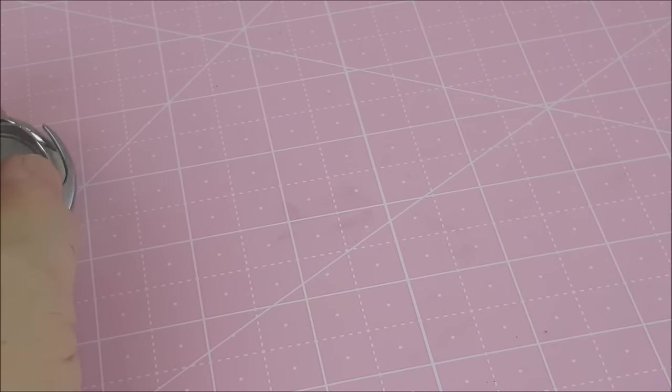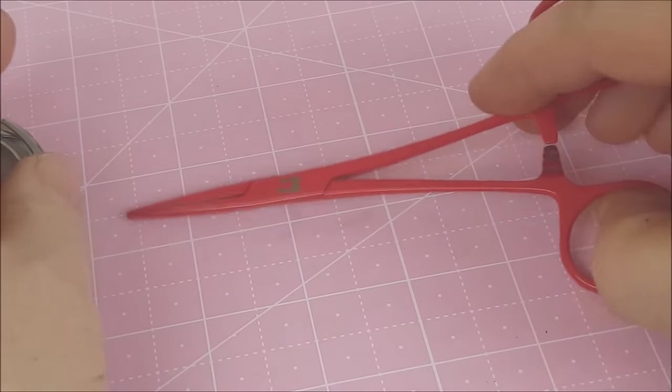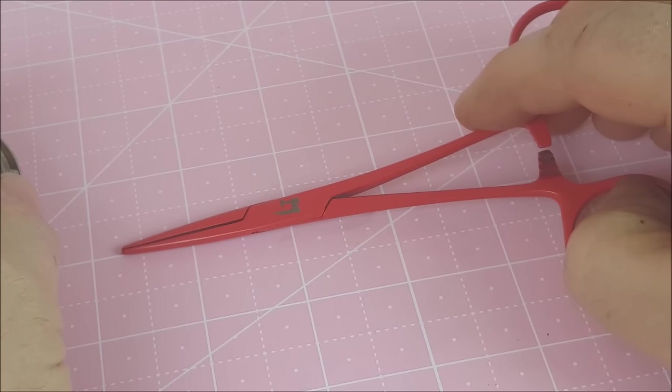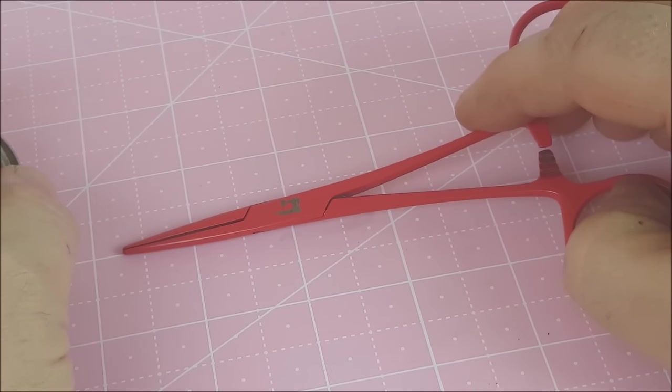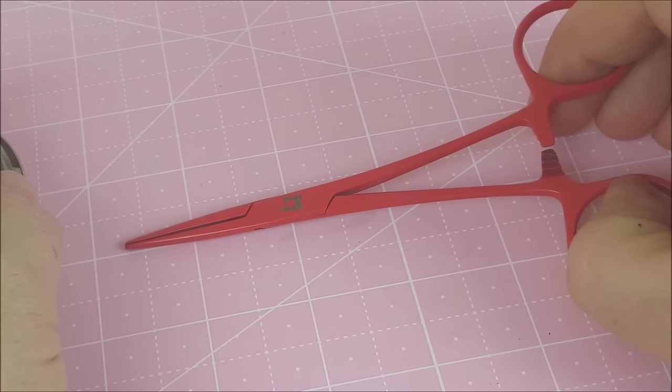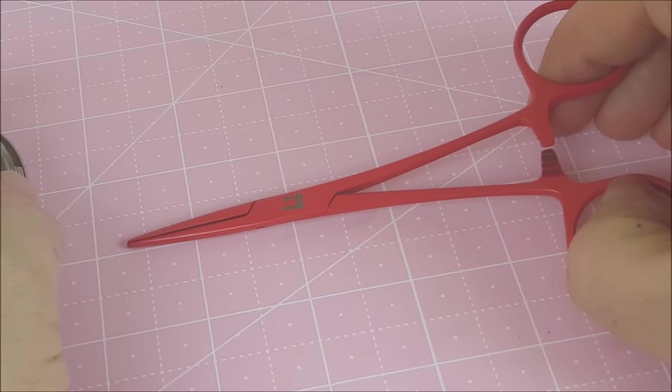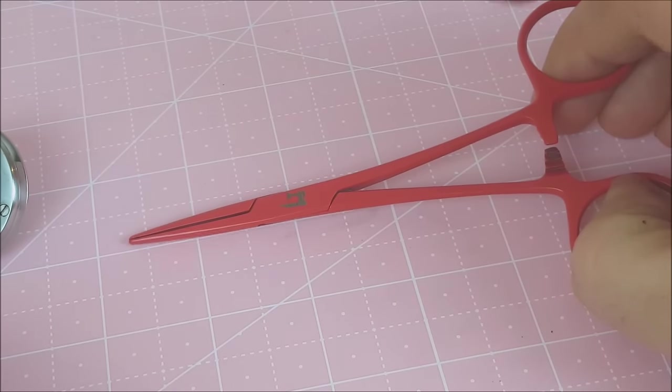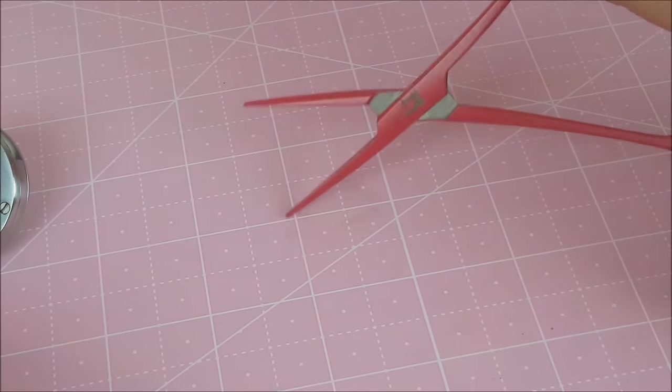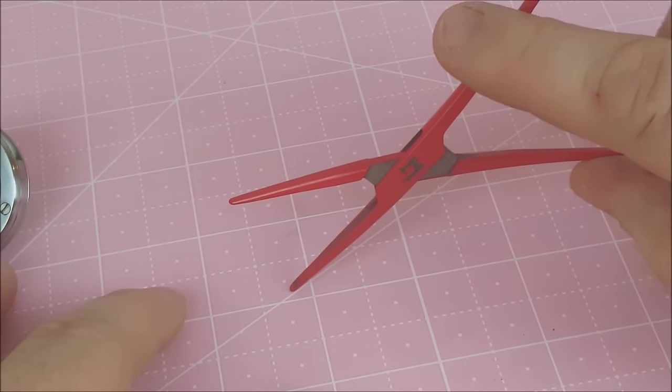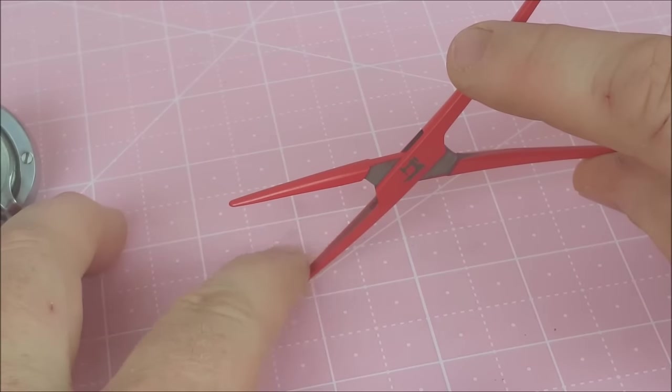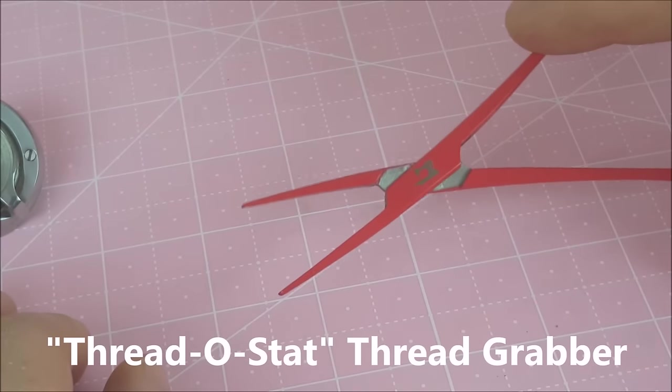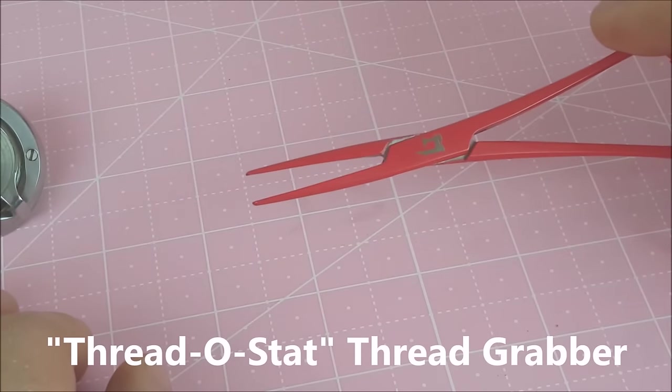Now while hemostats work great for this we found there's one issue with them and that is they end up walking off, walking out of your sewing room and ending up in the toolbox or the tackle box. So we had these developed. They're of course a pretty red color but they also have a little featherweight on them and so there's no mistaking who these belong to.